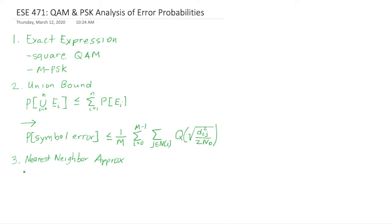And so what we came up with is this probability of symbol error is approximated by the number of neighbors that are separated by some minimum distance, that's n_min, divided by the number of symbols, and then the Q function just including the minimum distance.